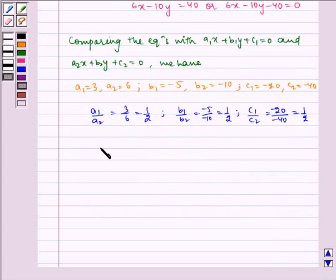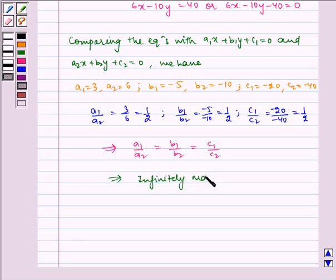We can see that a1 by a2 equals b1 by b2 equals c1 by c2, which implies infinitely many solutions.